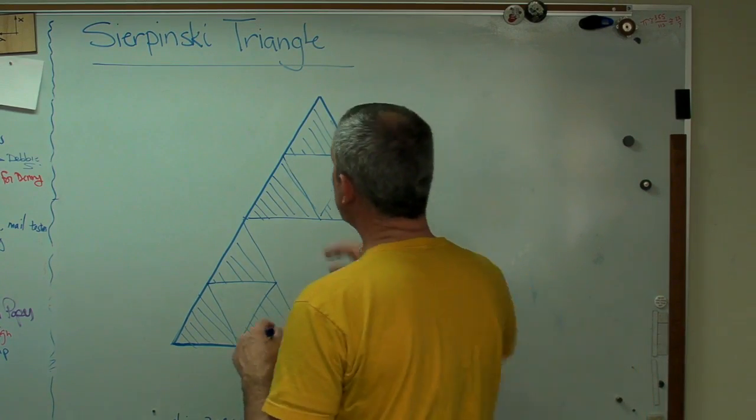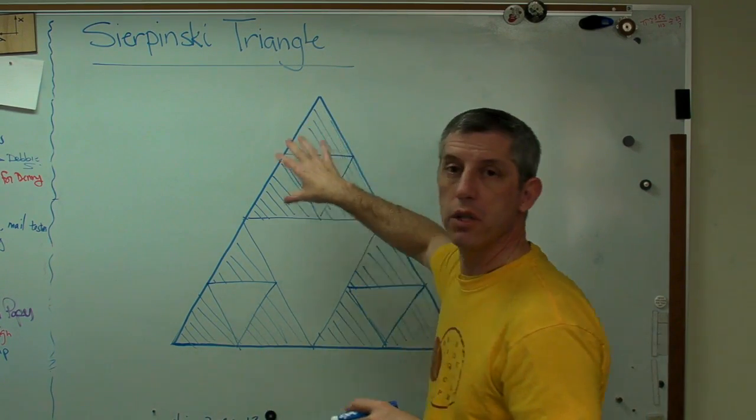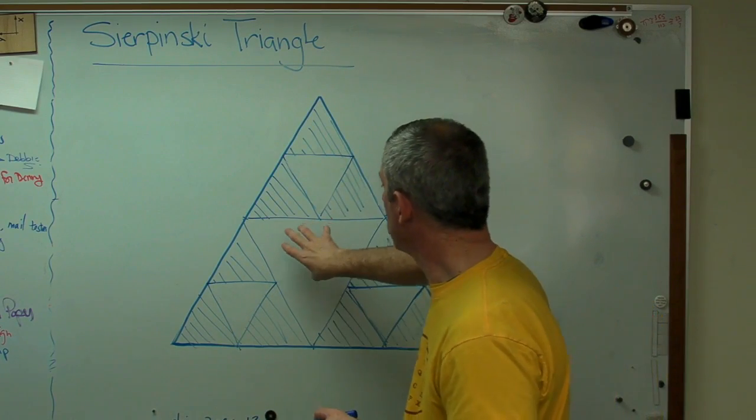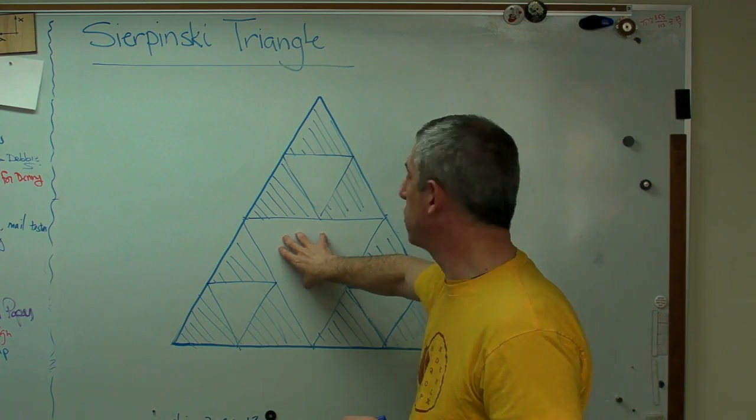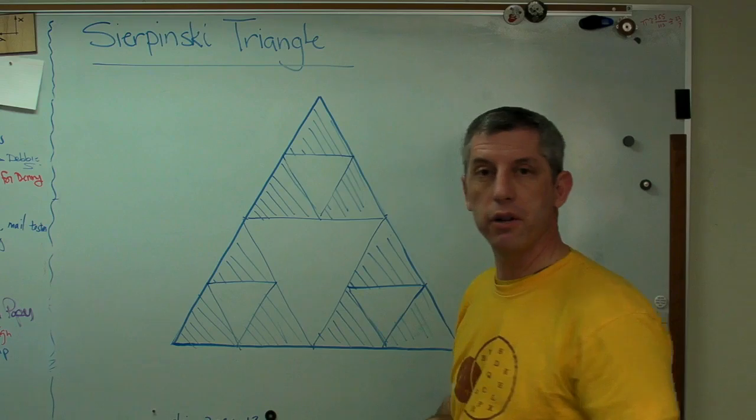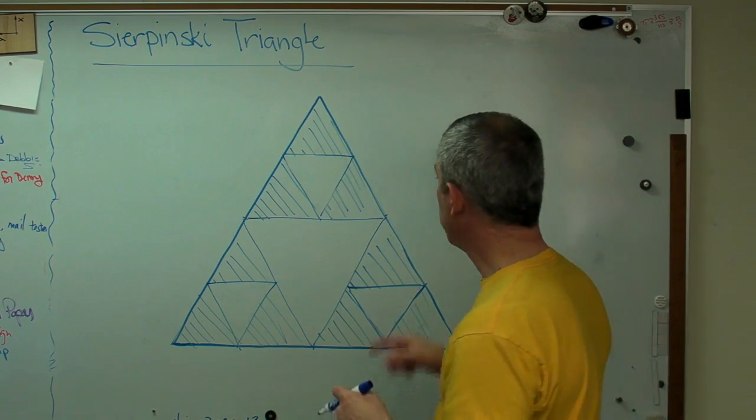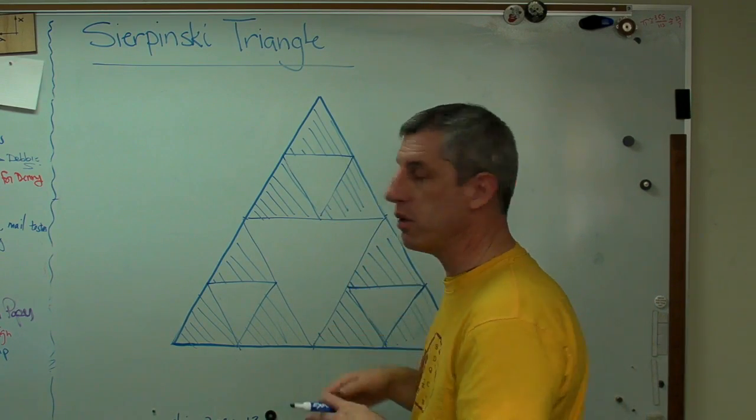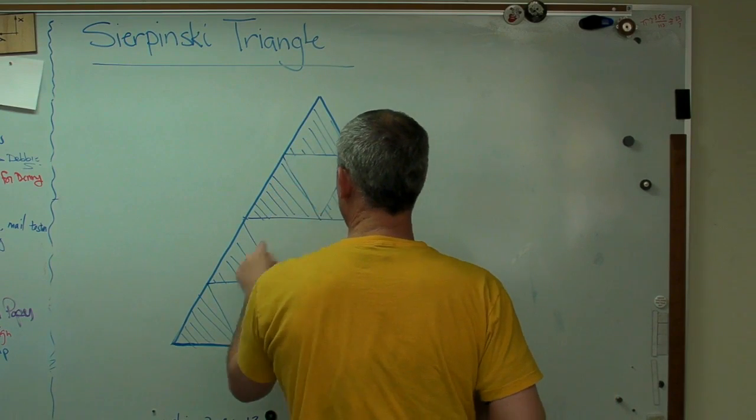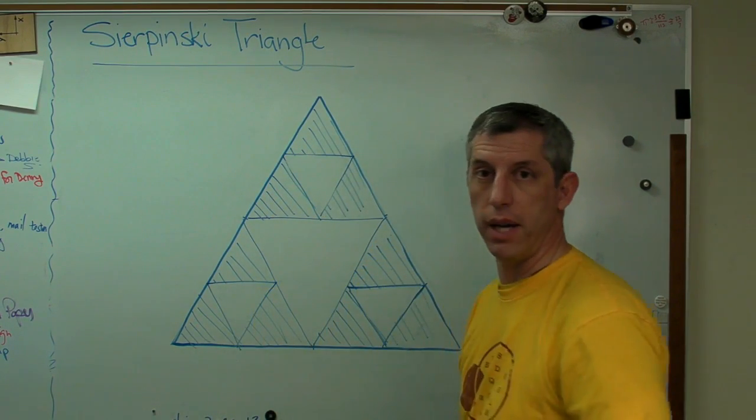Okay, so this is what's called the second iteration. The S0 was the original triangle. S1 was with the big triangle removed, and S2 was with these other little triangles removed. So we had one, then we had three triangles remaining. Now we have one, two, three, four, five, six, seven, eight, nine triangles remaining.